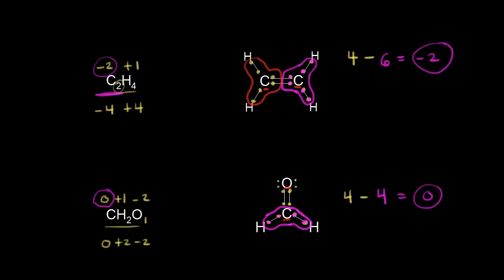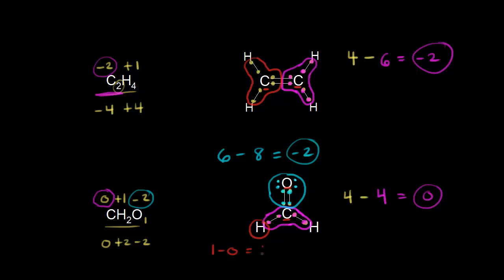We can also verify the other atoms. Oxygen should have six valence electrons, and counting the electrons around it after assigning by electronegativity gives eight, so six minus eight equals minus two for oxygen — as expected. For hydrogen, it should have one valence electron, but there are zero electrons around it since carbon is more electronegative, so one minus zero gives an oxidation state of plus one. This formula works for other atoms too.